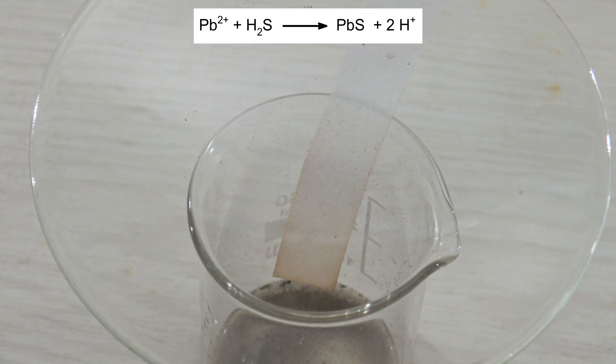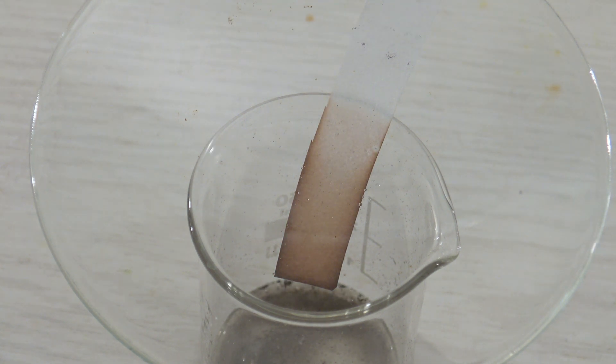The lead ions in the paper react with hydrogen sulfide to form lead sulfide, which leads to the paper turning brown or black. The formation of hydrogen sulfide is a proof that sulfides are present in the sample.